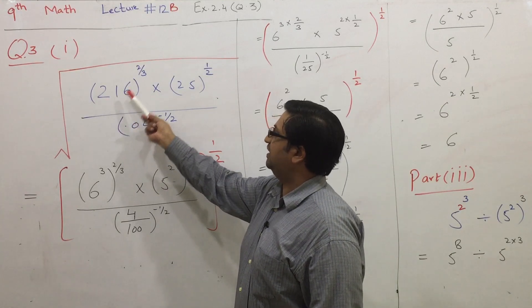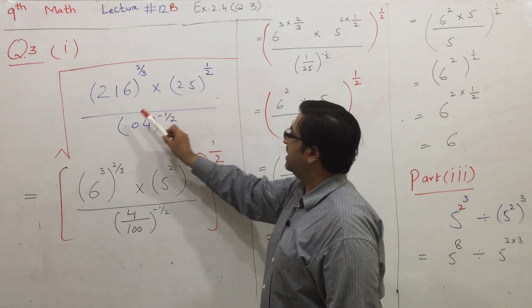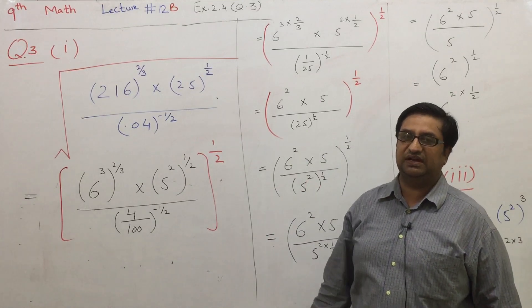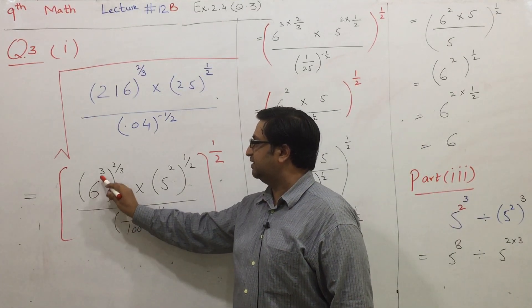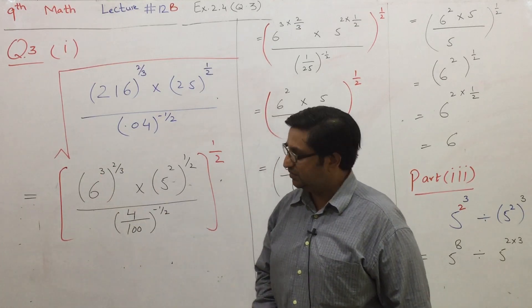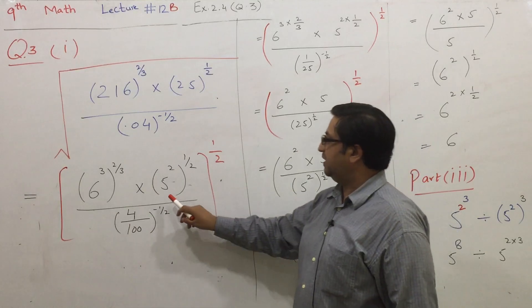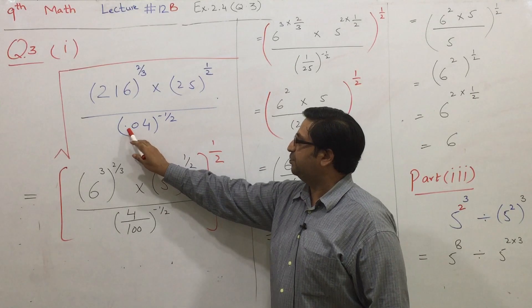We will solve 216 to the power 2 by 3, times 25 to the power 1 by 2. We will solve 216 to power 2 by 3, 25 to the power 1 by 2. 216 can be written as 6 to the power 3, 25 can be written as 5 squared. Here we will use the power rule.